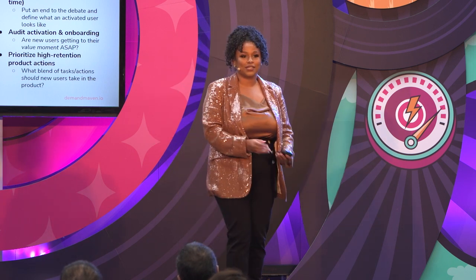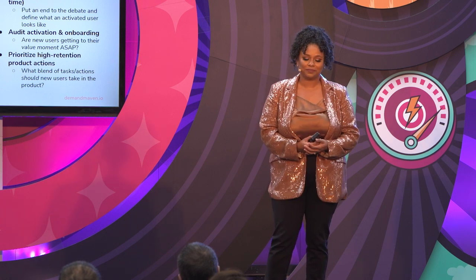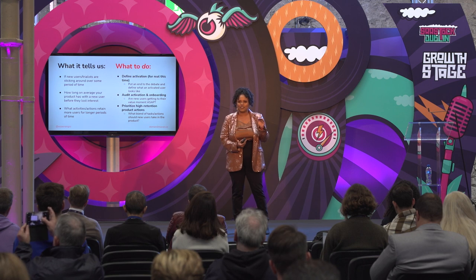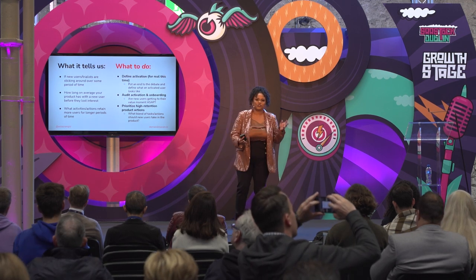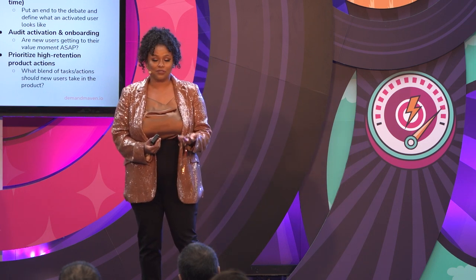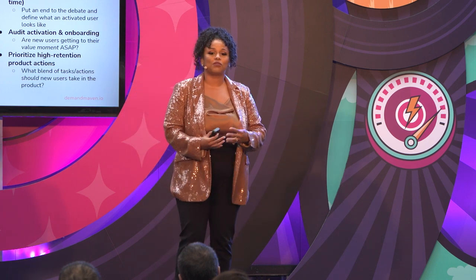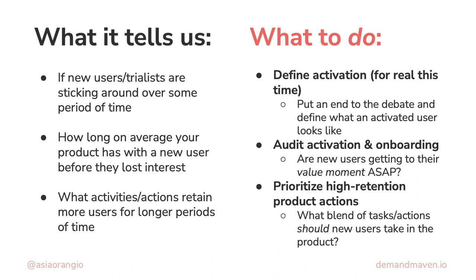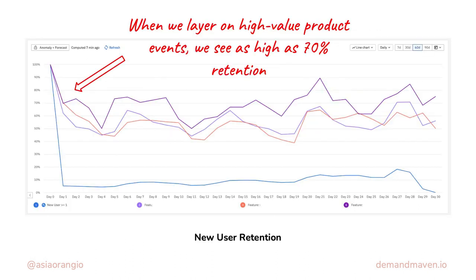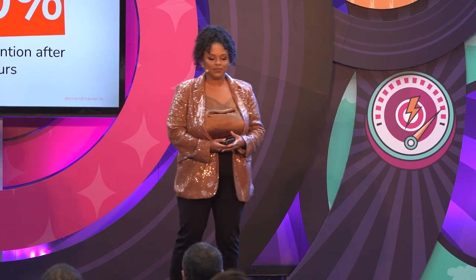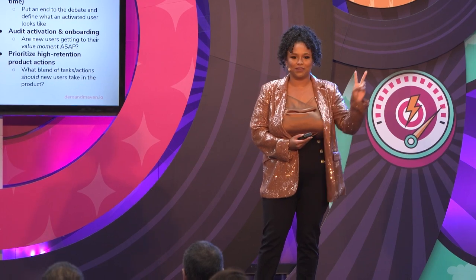We need to: one, have a clear answer for what an activated user is; two, get real alignment around it; and three, actually measure it — because if we're not measuring this, we're leaving money on the table. Audit your activation and onboarding experience — both are critical. Your onboarding isn't just your signup flow; it's your whole entire customer experience. When it's incredible, activation becomes much easier. Finally, prioritize high-retention product actions — those top lines on the chart represent behaviors customers should be taking when they first sign up.